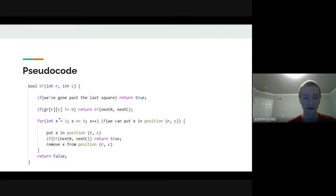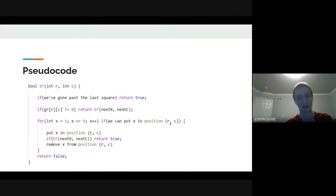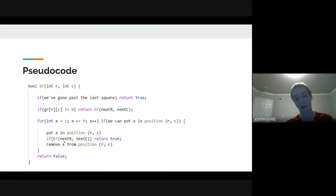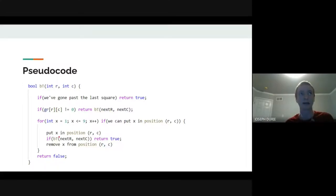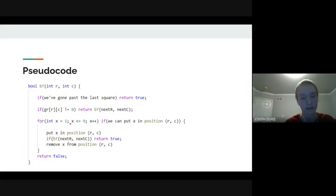Here's the pseudocode: when we go past the last square—when r equals 9—that means all squares are filled correctly, so return true. If the current square already has a value (non-zero), it's a fixed given, so skip to the next square. Otherwise, iterate through values 1–9, check if we can place x at position (r, c), recurse to the next square, and if that fails, remove x and try the next value. If no value works, return false.